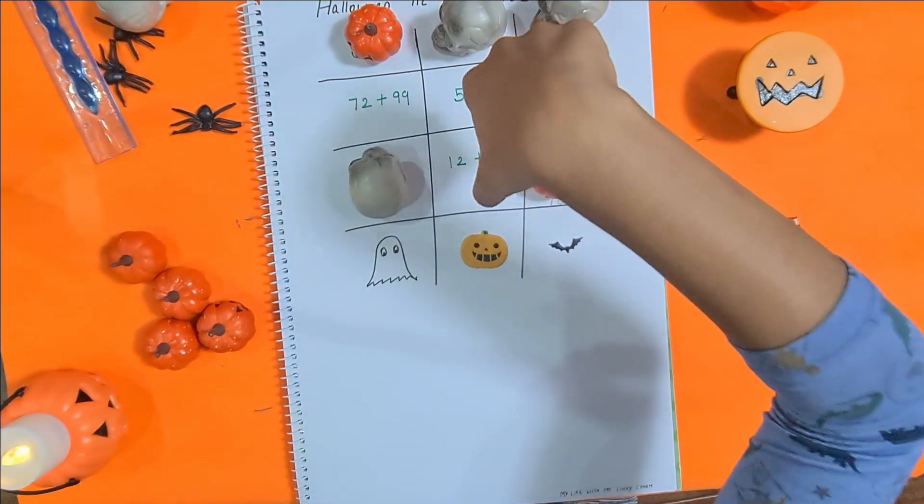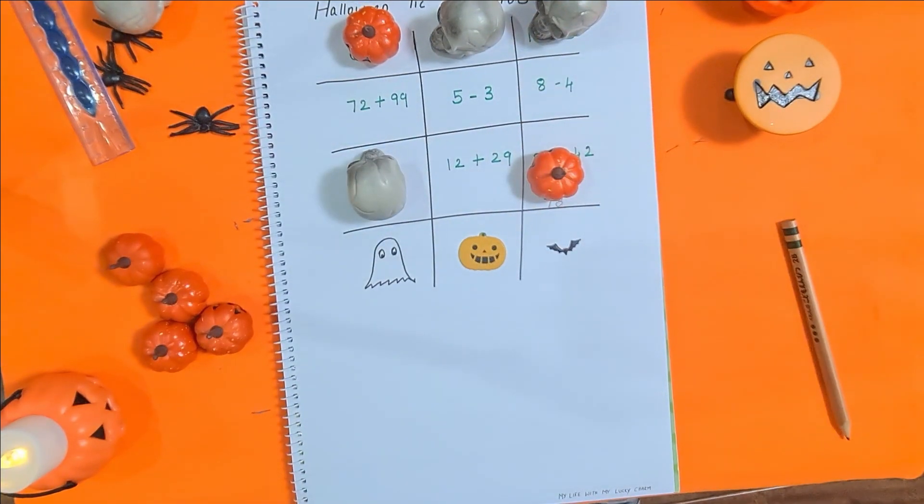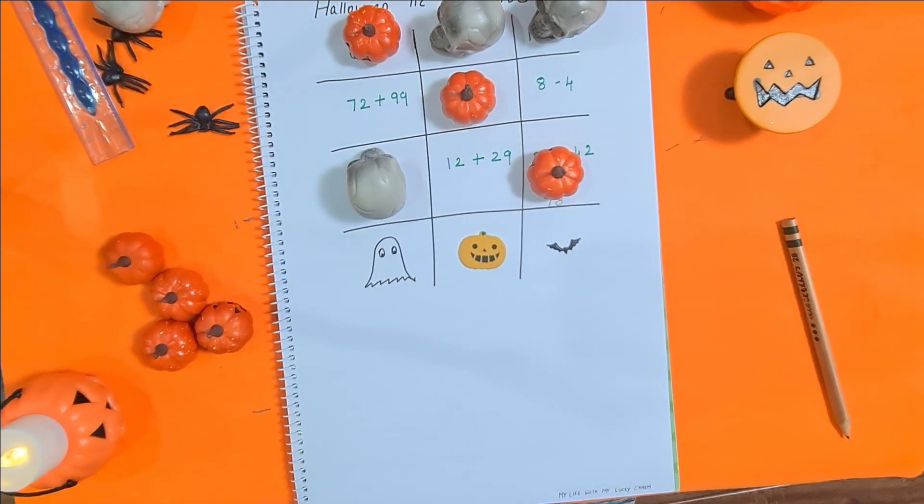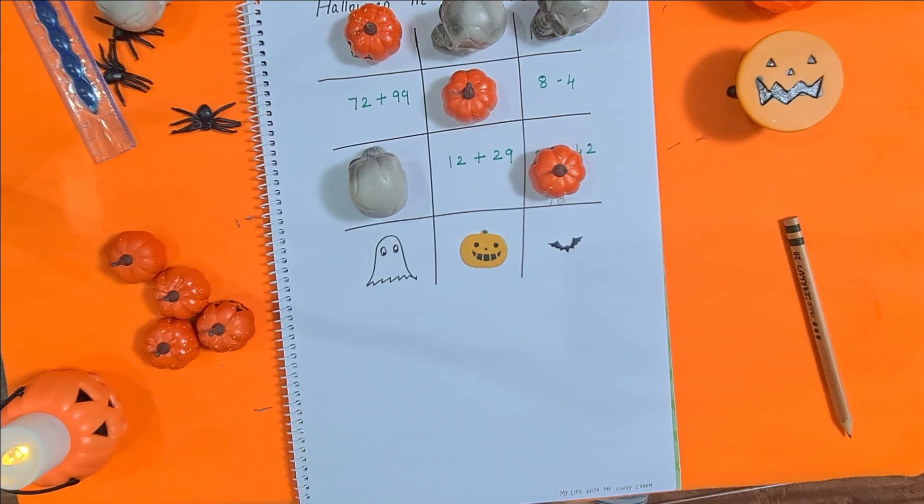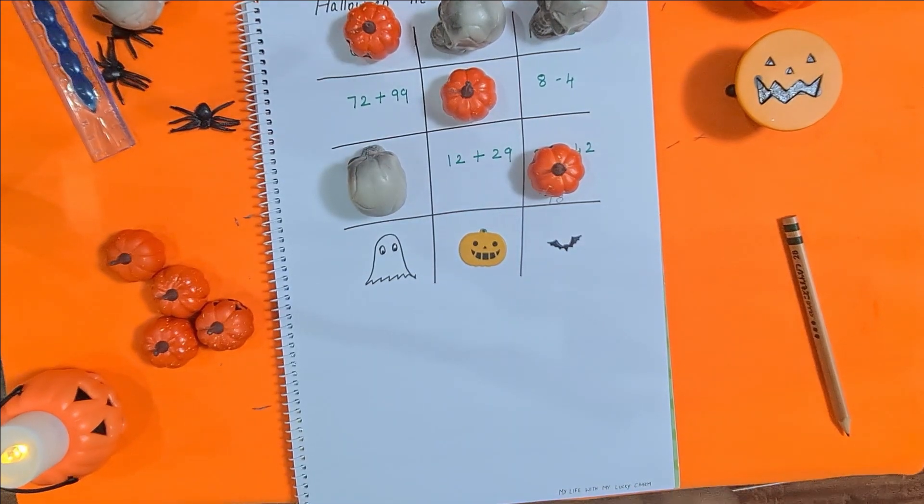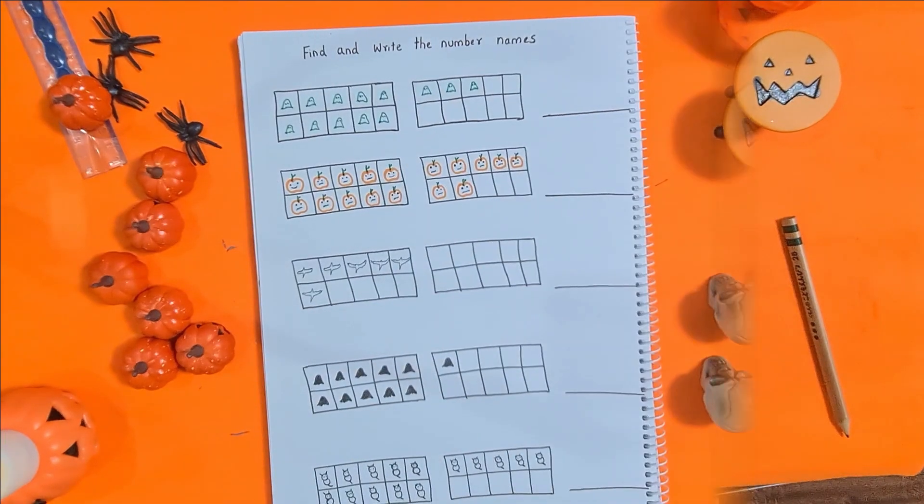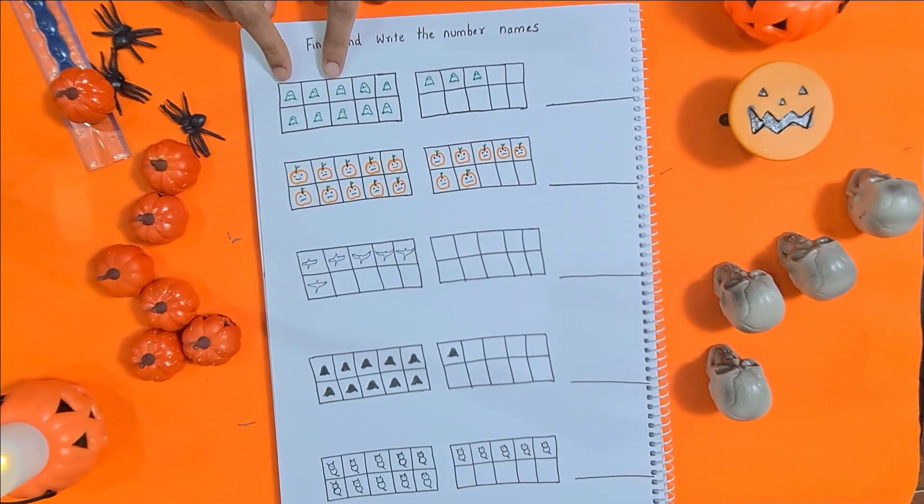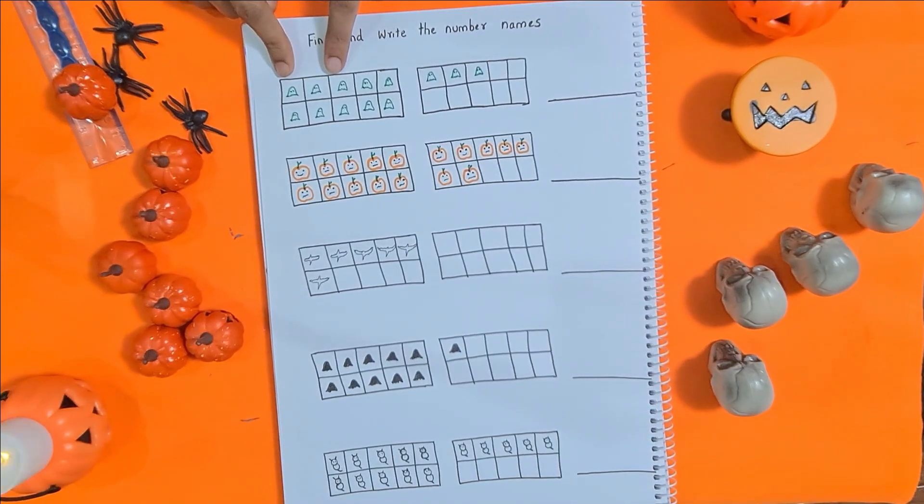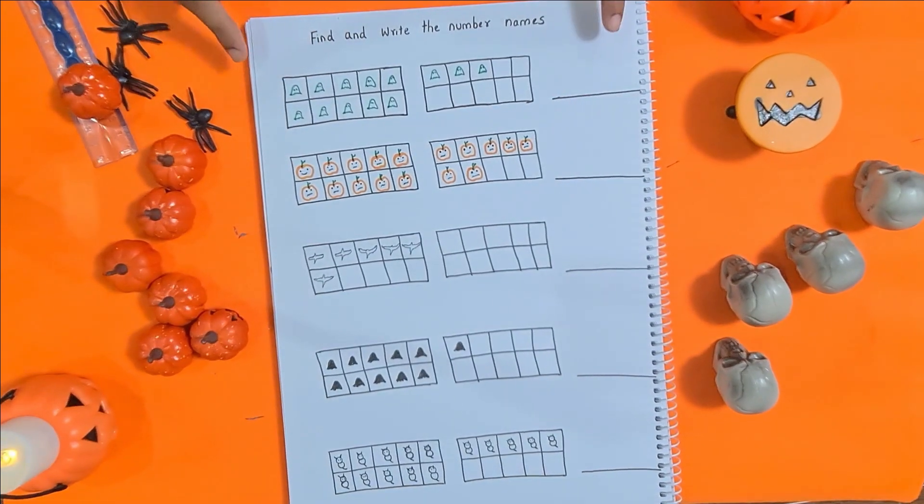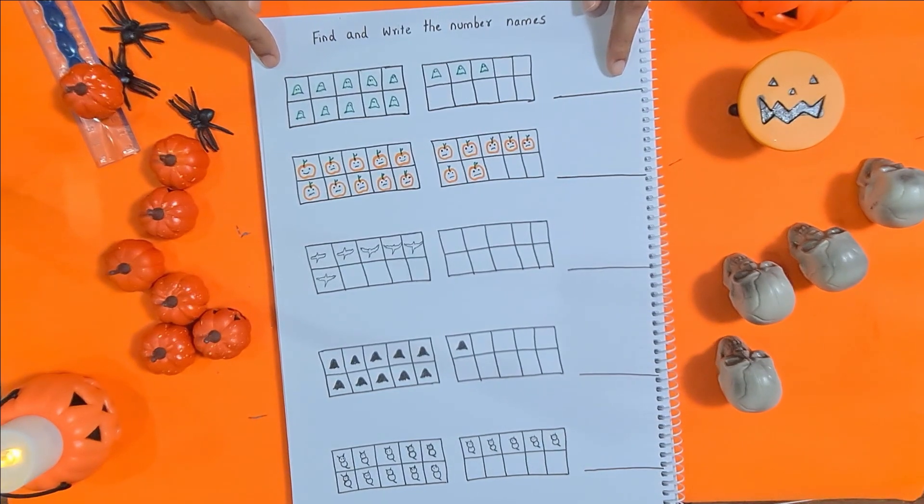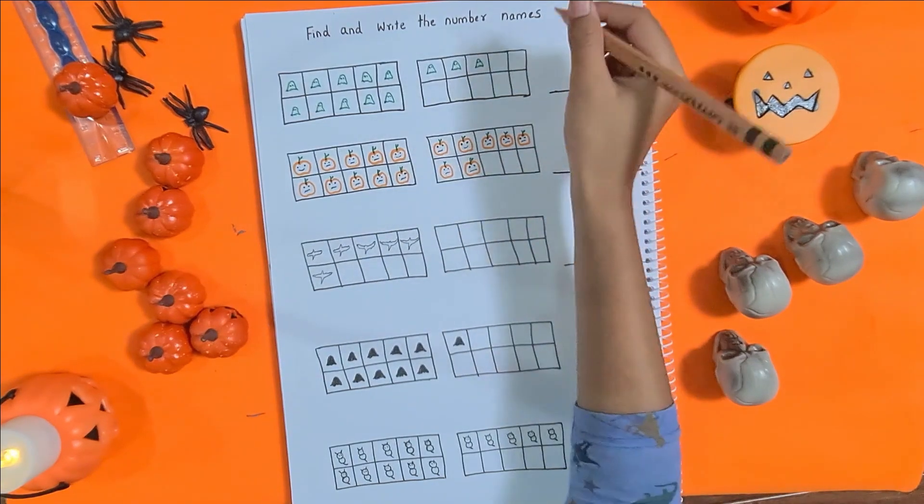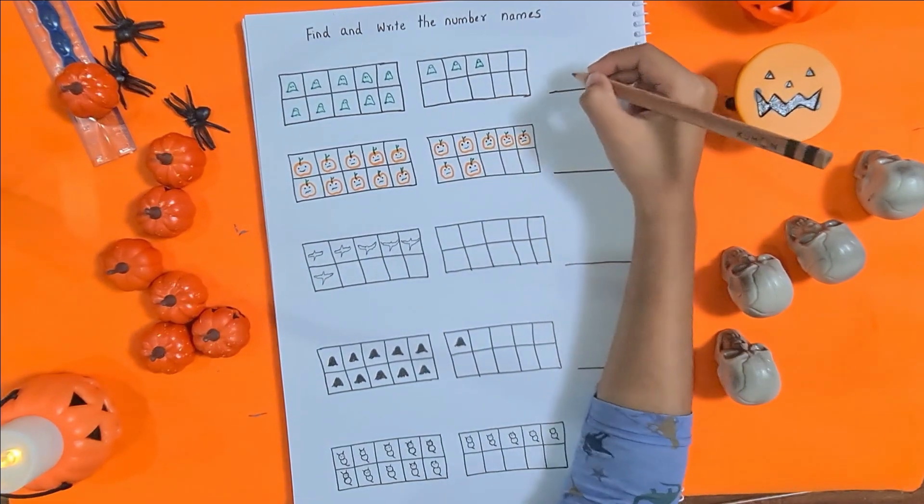Five minus three is two. I want tic-tac-toe! I missed it. Yeah, I won the first three. The next activity is find and write the number names. He just needs to count the ghosts or the jack-o'-lanterns and write the numbers. There are ten ghosts and three ghosts more, so thirteen.